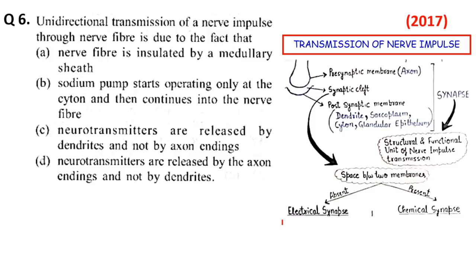यह synaptic cleft — पूरे को synapse कहते हैं। Synaptic cleft absent होगा जहाँ electrical synapse हो — electric current जो impulse move कर रहा है उसको किसी chemical change की जरूरत नहीं। और दूसरा है chemical synapse जहाँ neurotransmitter, that is a chemical form. Options में से: neurotransmitters are released by the axon ending and not by dendrites — यही correct है। Neurotransmitters are released by dendrites — यह गलत है। Sodium pump starts only at the cytone — wrong। Nerve fiber is insulated by medullary sheath — होते तो हैं लेकिन कुछ portions पर jump करके आगे move कर सकता है जहाँ myelin sheath नहीं होती। तो option D सही होगा — neurotransmitters are released by the axon ending and not by dendrites, and because of that transmission of nerve impulse is unidirectional।